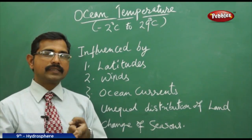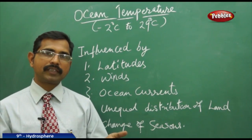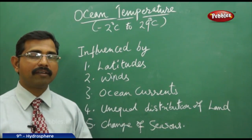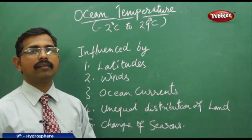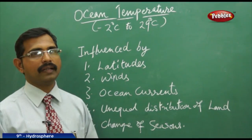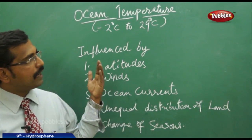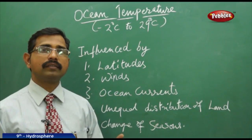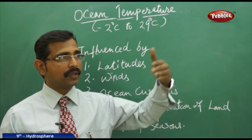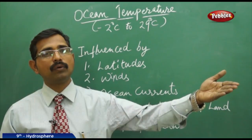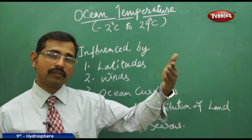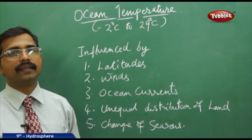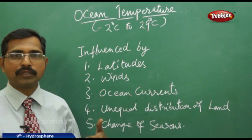It is not a huge variation from land to ocean in terms of temperature, but every single degree will have a different impact on the land. For example, the southwest monsoon in India is affected by the Pacific Ocean's El Niño and La Niña effects, which influence these monsoons.